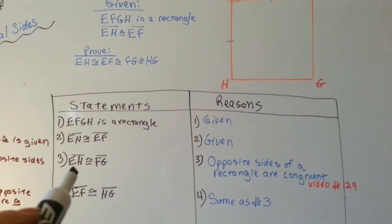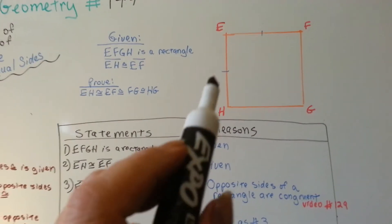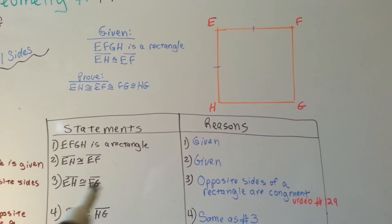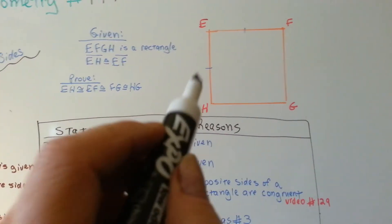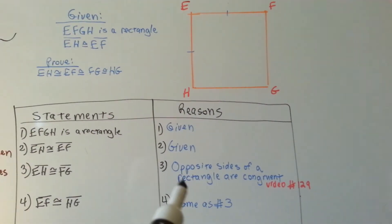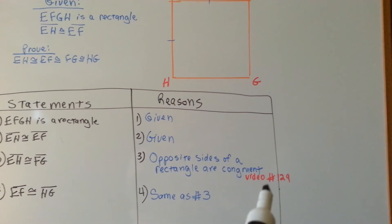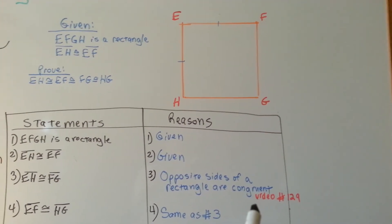We can now say, because EH and EF are congruent, that EH and FG are congruent. Why? Because opposite sides of a rectangle are congruent. You can watch video number 129, and that'll talk about that more.